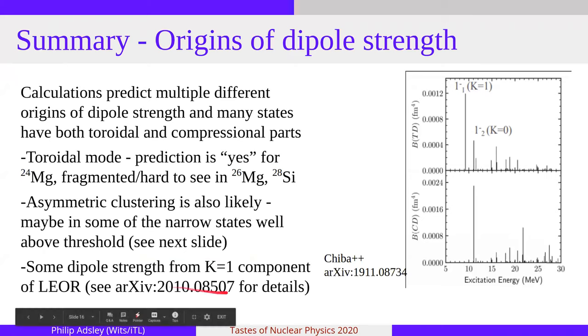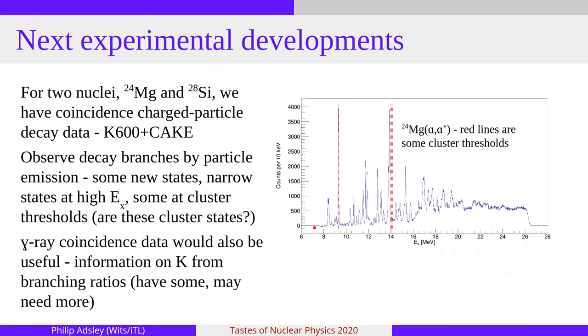And one thing that I've also omitted from here is some of the dipole strength comes from the K equals one component of states with an octupole nature. If you're interested in that, here is the reference to the paper. I think it's a bit too complicated to be getting into now. So I've left it to one side. But in case you were wondering, there is some evidence for one minus strength from the K equals one component of octupole states.